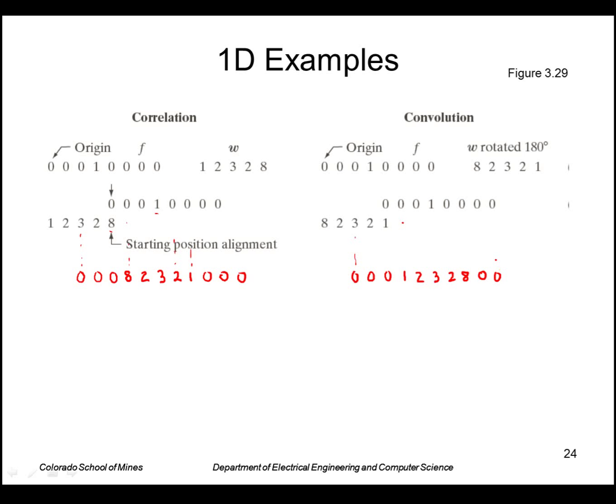So just to note here: correlating a mask with an impulse gives you the mask back but flipped. Convolving a mask with an impulse gets you the mask back exactly.